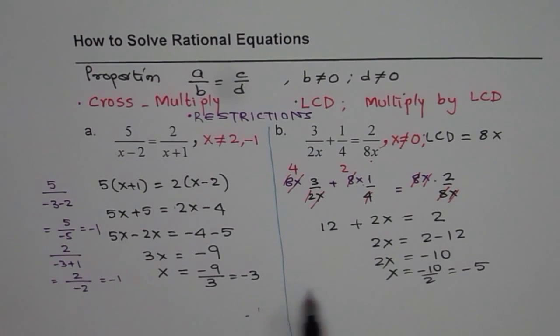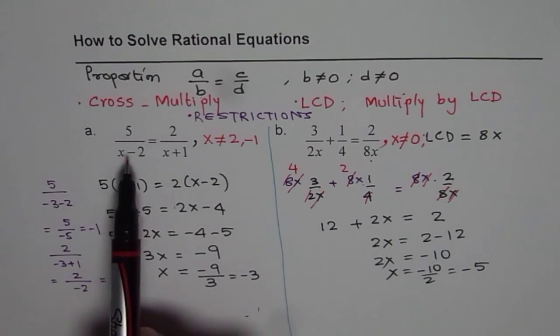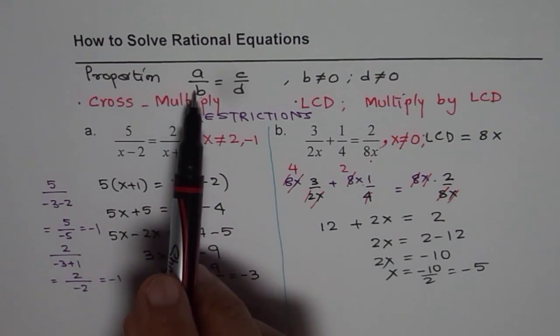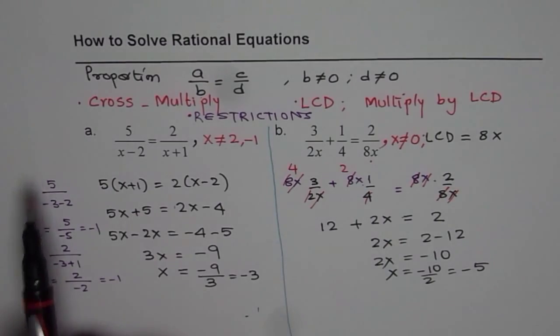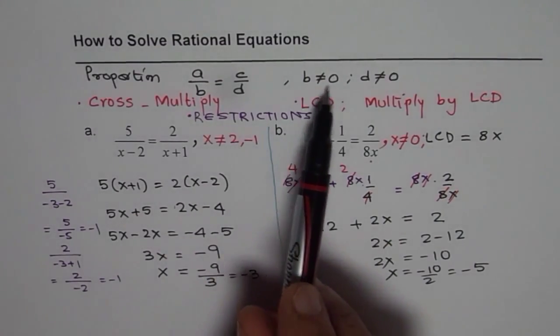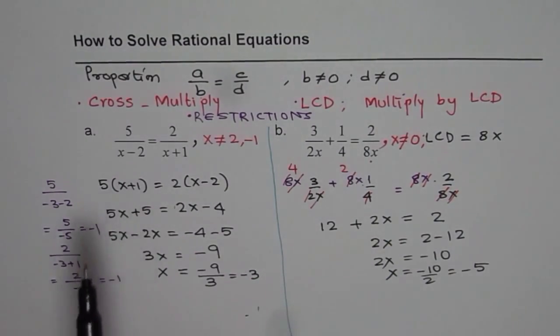But I hope with this you understand that in this chapter of solving rational equations, algebra 1, we are going to adopt only 2 methods. If the equation is given in proportion form, then ensure that the denominator is not 0 by writing restrictions. Cross multiply, find the answer, check your answer with the restriction.